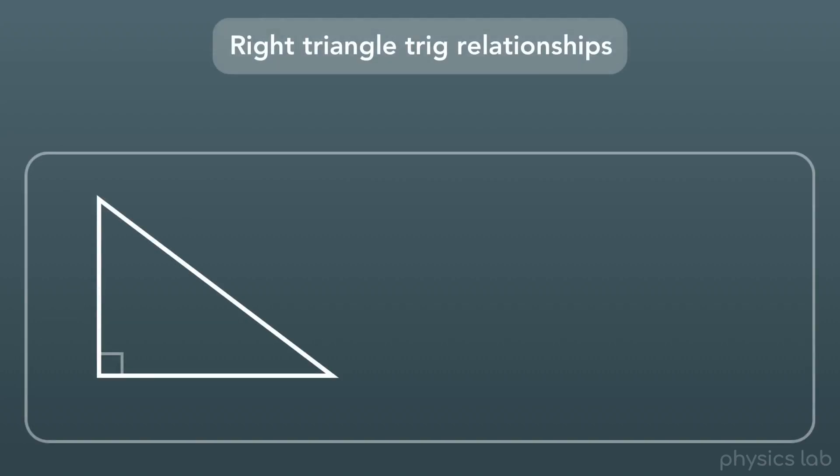So first we start with a right triangle, where one angle is 90 degrees. We learned that the longest side of the triangle, which is across from the 90 degree angle, is called the hypotenuse.